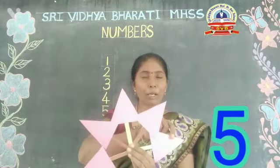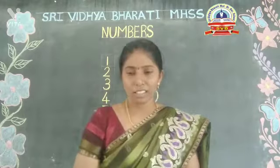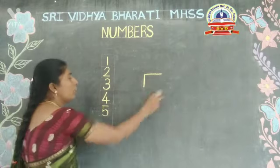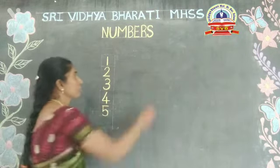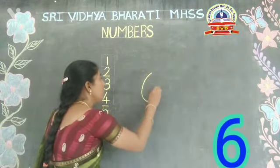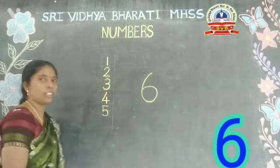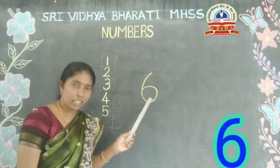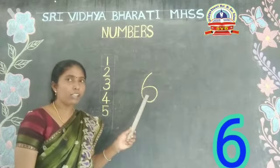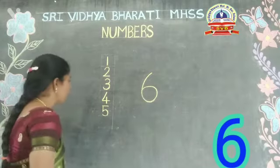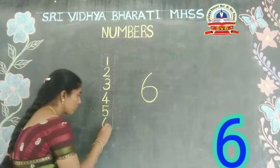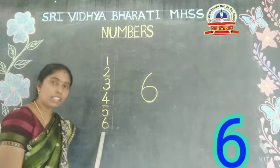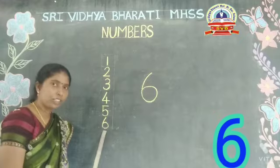Ok children. Shall we move to the next number? Look at the board. This is number 5. Say 5, 5, 5. Let us write the number in sequence. See here. Say it with me. 5, 5, 5.